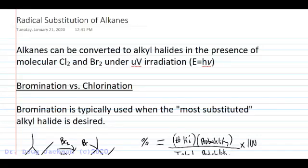Let's talk about radical substitution of alkanes. We can form monosubstituted alkyl halides from alkanes in the presence of molecular chlorine and bromine under UV radiation. We'll represent the photons of that radiation by the photon energy formula, E equals Planck's constant times the frequency of light. We'll use h nu as our indication that we're using this radical initiator UV irradiation.